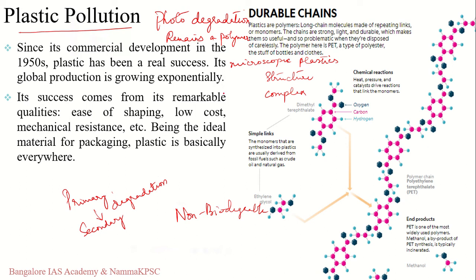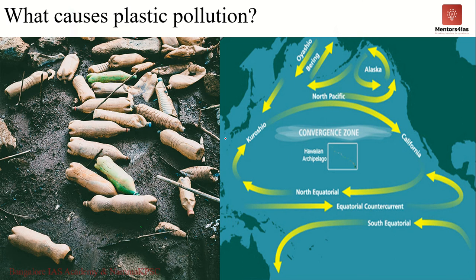Plastic does decompose, but due to its inherent molecular stability it takes a very long time. For example, a foamed plastic cup will take at least 50 years to decompose. Plastic drinking bottles will take around 400 years to decompose. Since plastic cannot be degraded easily, it accumulates over time — resulting in plastic pollution, especially in our oceans.